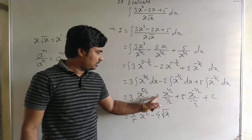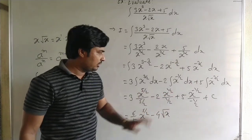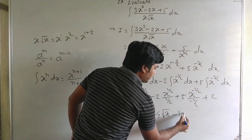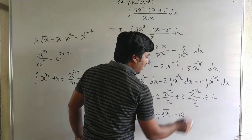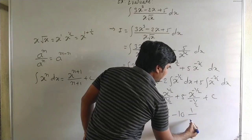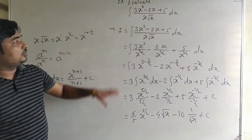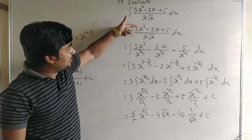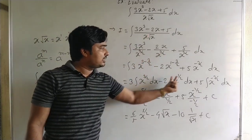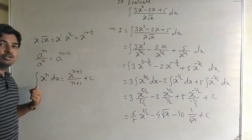For the last term, 2 and 5 into 2 gives 10, so it is 10 into x to the power minus 1 by 2, which is 1 by under root x, plus c. This is the integral. Given that two terms are in division, we expressed it as addition and subtraction and got the integral using the formula for x to the power n.